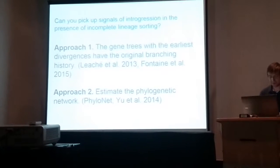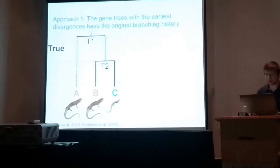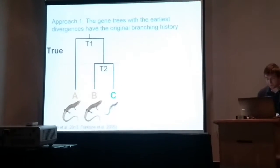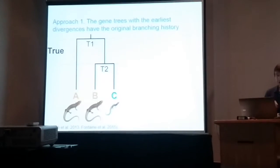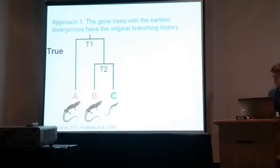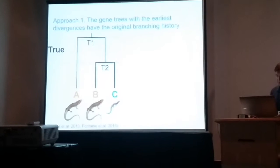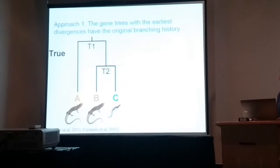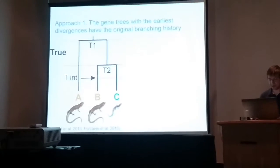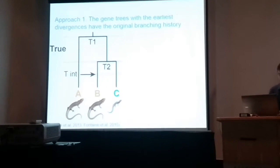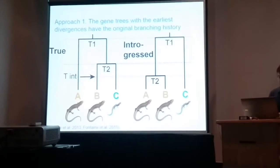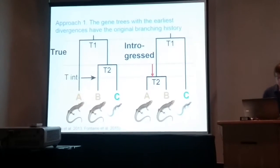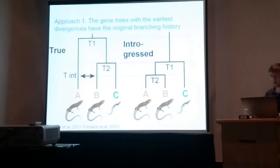This first approach was based on a simulation study by Lacey et al. 2013 and a recent publication by Fontaine et al. 2015. Their basic stipulation was that for any given three-taxon combination, triplet gene tree topologies with the earliest divergences represented the true branching history. The tree above represents the true branching history assuming the mitochondrial phylogeny is correct. Time one is the node that splits outgroup taxon A from parallel taxa B and C, and time two is the node that splits parallel taxa B and C. Now, assuming A introgresses into B, given sufficient migration rates, some portions of the gene trees will show A and B becoming sister, with node T2 occurring later at the time of introgression.